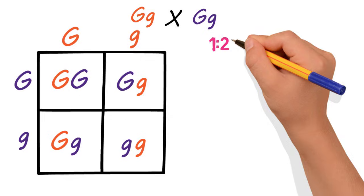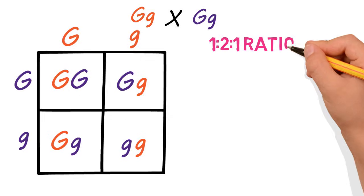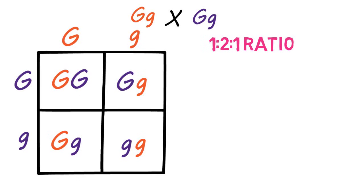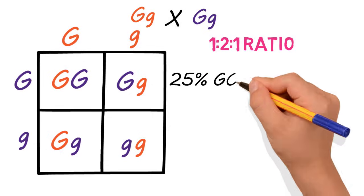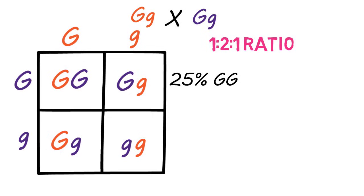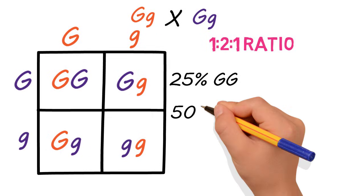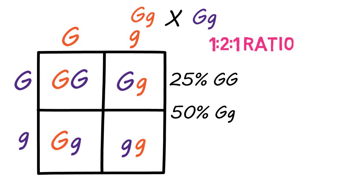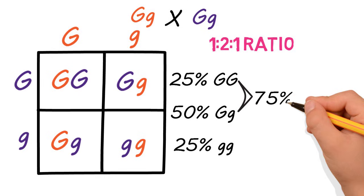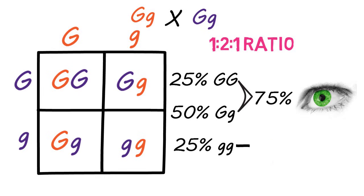This cross results in a 1 to 2 to 1 genotype ratio: 25% homozygous dominant (big G, big G), 50% heterozygous (big G, little g), and 25% homozygous recessive (little g, little g). The phenotypic ratio would be a 3 to 1 ratio, with 75% green eyes and 25% blue eyes.